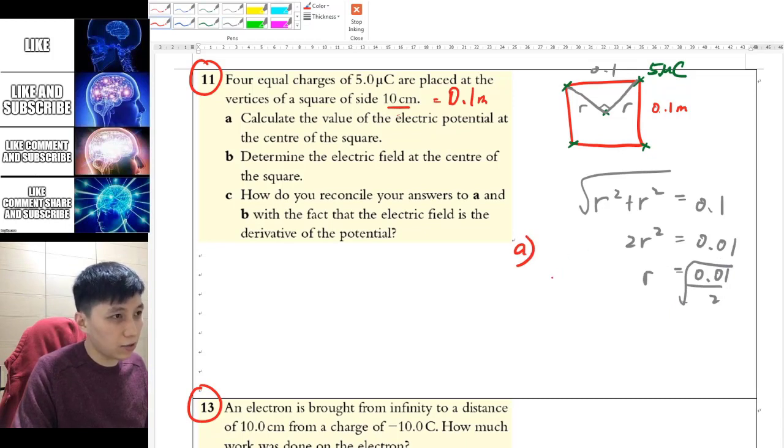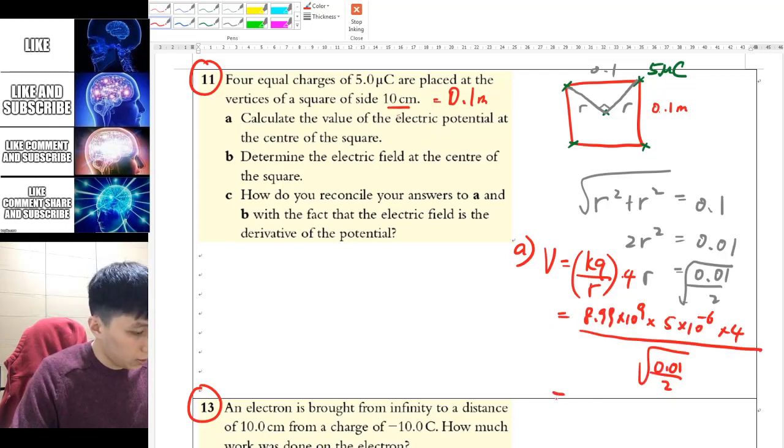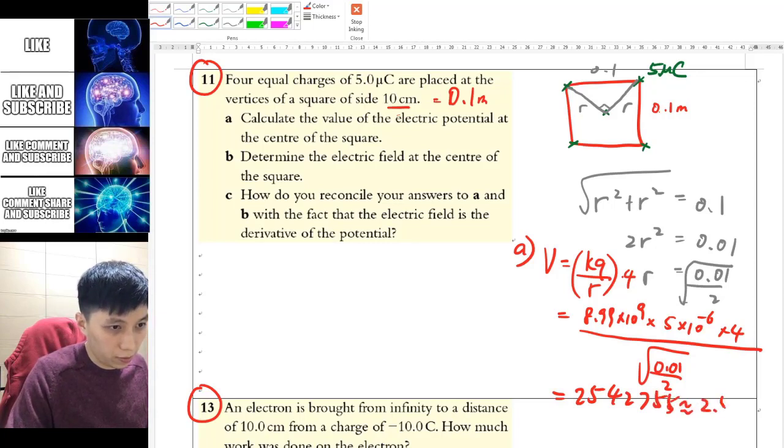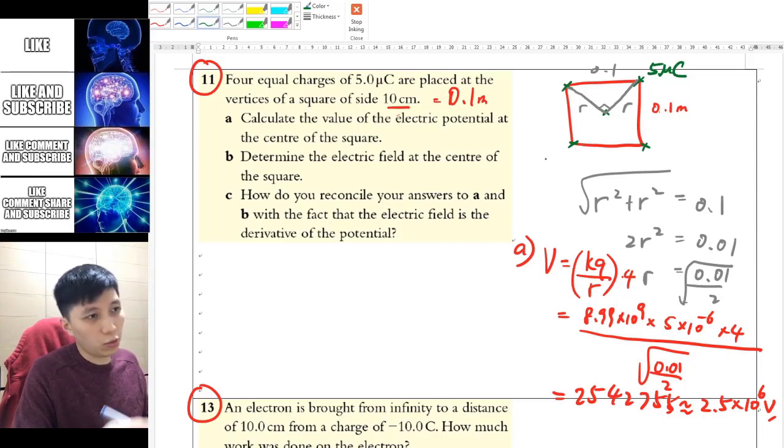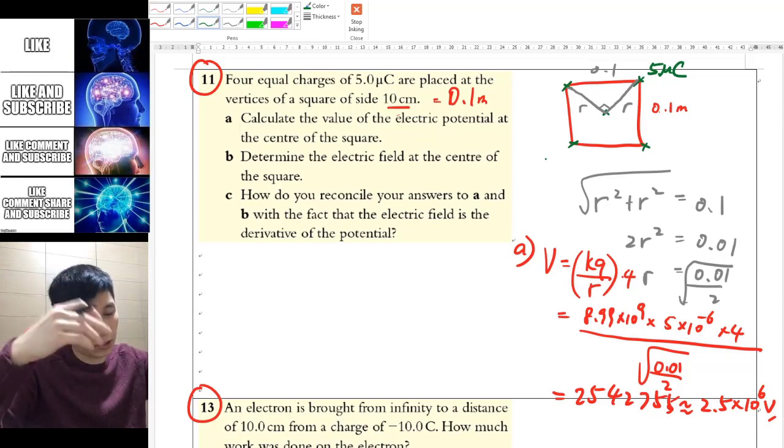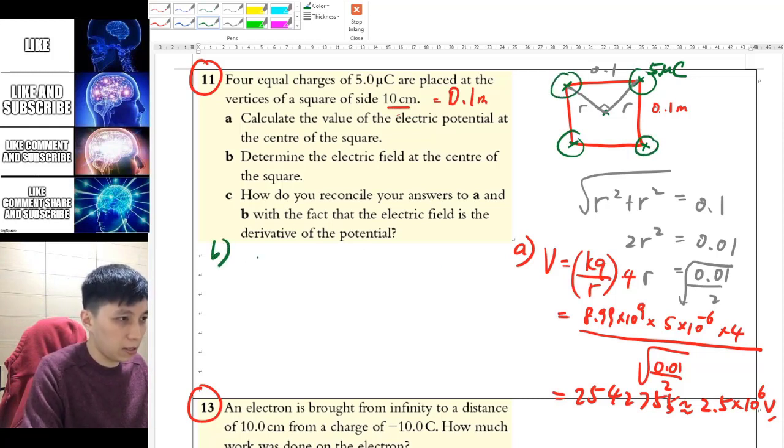Let's call it r. By using cosine law or Pythagoras theorem with 90 degrees, r squared plus r squared equals 0.01, so r equals root(0.01/2). For part a, it's simply kq over r, and since you have 4 identical charges, multiply by 4. The answer should be 2.5 times 10 to the power of 6 volts.